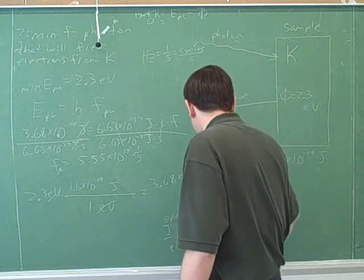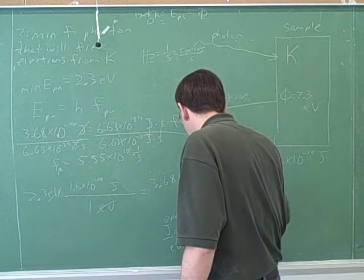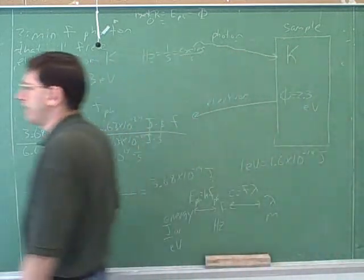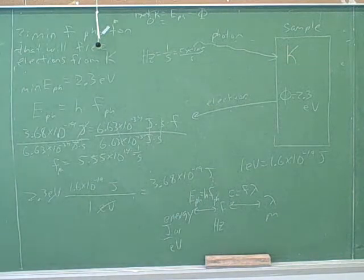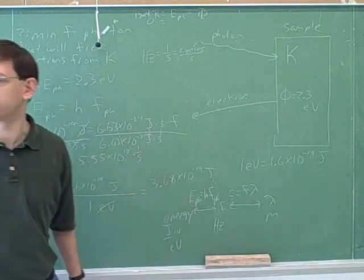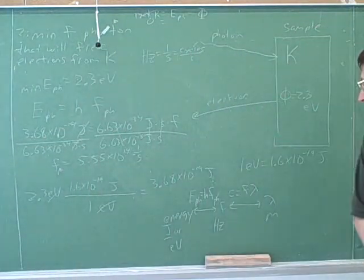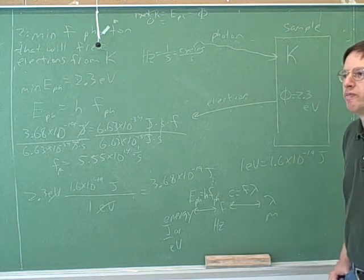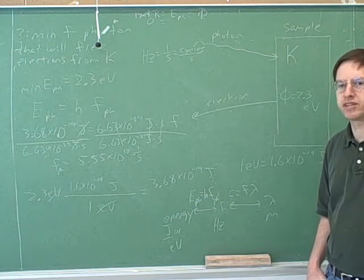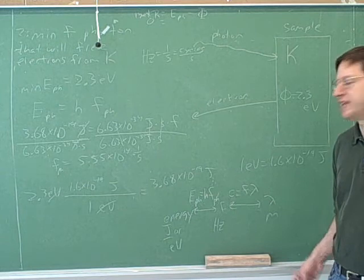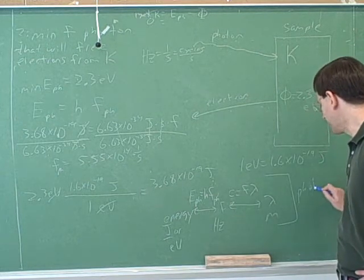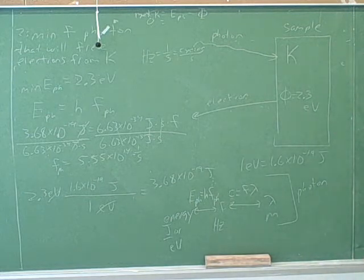We should always write this formula as: energy of a photon equals h times frequency of a photon, because the way we deal with the energy of an electron is completely different. We only use this formula for photons. This equation is only for photons, not for particles with mass — I wanted to emphasize that because it's a common student mistake. Remember that electrons can also be treated as waves, so electrons also have a wavelength, but this is the photon flowchart, not the electron flowchart. Maybe later we'll get into the electron flowchart.